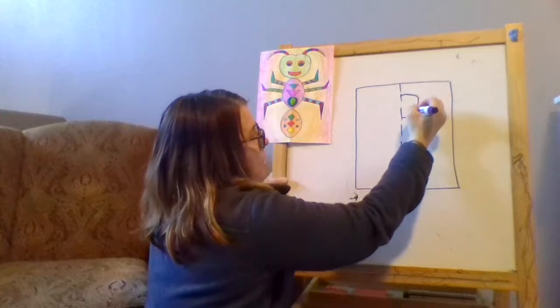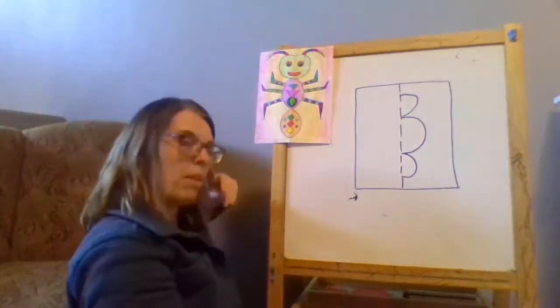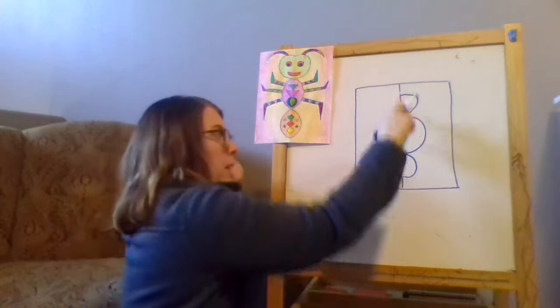So abdomen and then do half of a thorax and then half of a head. Think of all the different shapes you want to do. And do half of them. So there's my three body parts.